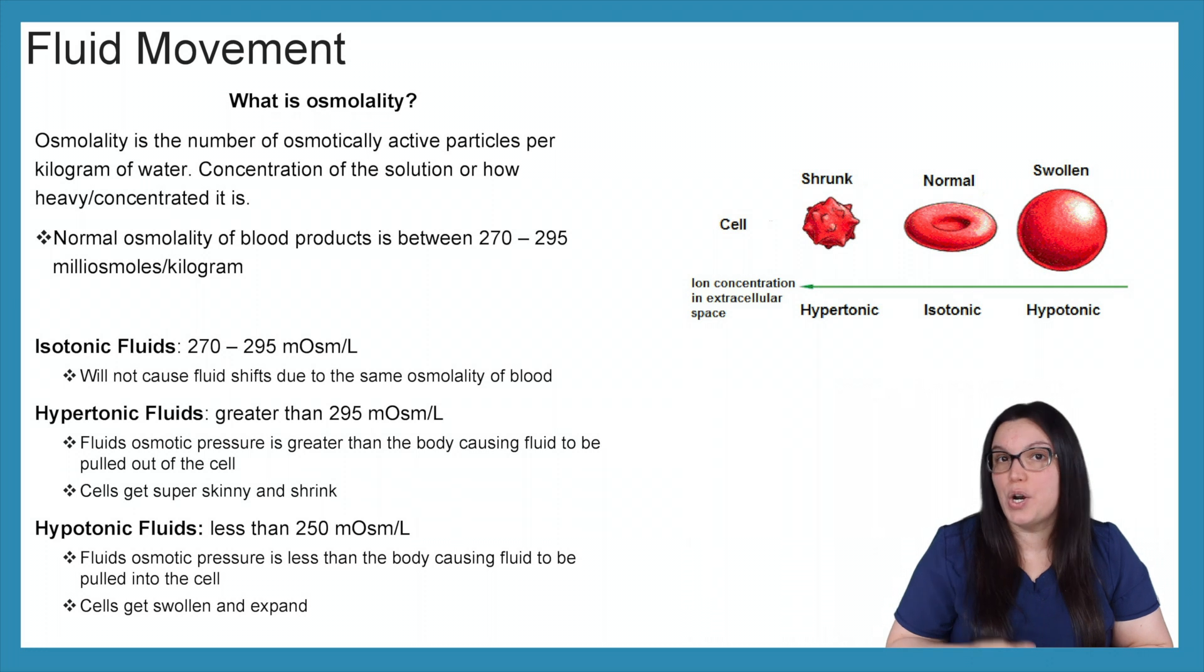With our hypertonic solutions, they are greater than 295. The fluid's osmotic pressure is greater than the body causing the fluid to be pulled out of the cells. Think of a really hyper person - they run around a lot, they're really thin. So with hypertonic solutions, the cells get really super skinny and they shrink.